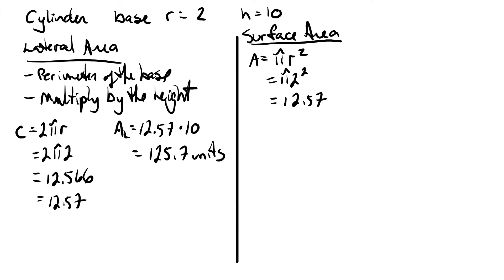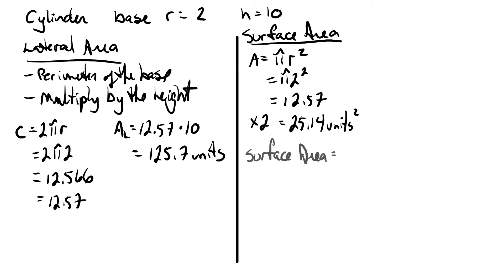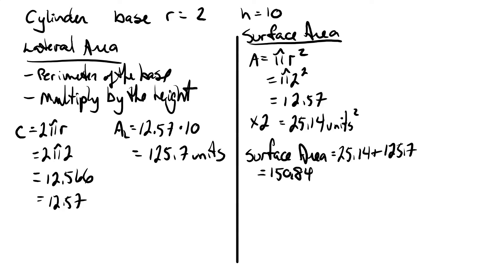It's strictly a coincidence that the area equals the circumference in this case. We multiply the base area by two because we have a top and a bottom to the cylinder, giving us twenty five point one four square units. Adding that to the lateral area of one hundred and twenty five point seven, we end up with a surface area of one hundred and fifty point eighty four square units.